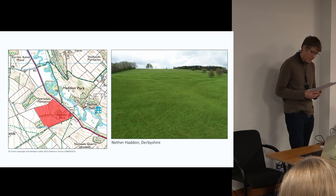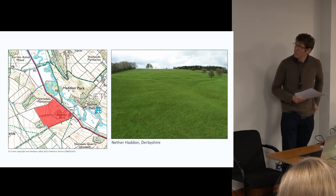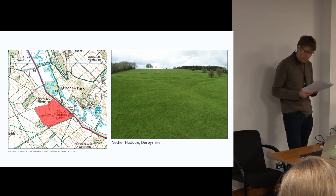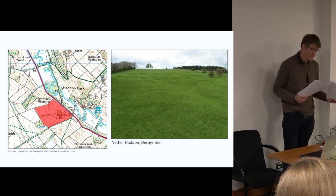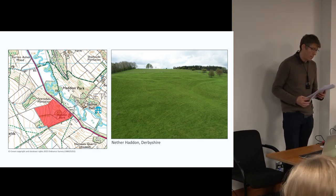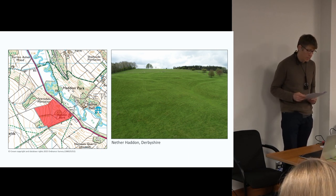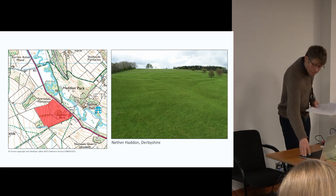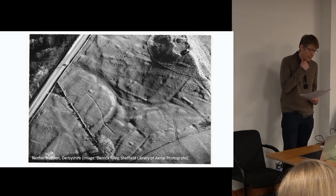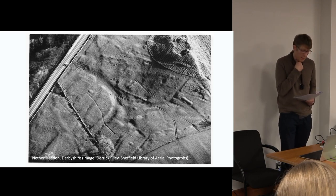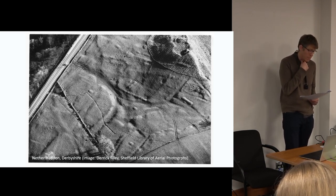Netherhaddon is the location of a medieval settlement that was abandoned by the 15th century, possibly around the time that Haddon Hall's Deer Park was established. A rapid sketch plan in the 1990s offered the only archaeological information we had alongside the scheduling and HER descriptions. The challenge at Netherhaddon was identifying the layout of the medieval settlement, disentangling it from later fields and parkland, as well as teasing out possible earlier features such as barrows.